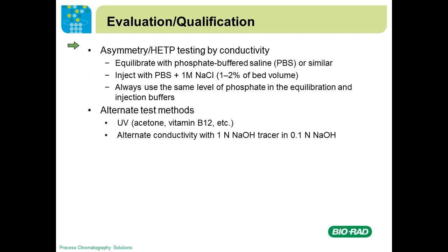Now you're ready to do asymmetry and HETP testing. You can do it two ways. Many people use conductivity: equilibrate the column with phosphate buffered saline, then inject PBS plus up to 1 molar sodium chloride, typically 1 to 2% of the bed volume. Always use the same level of phosphate in both equilibration and injection buffers — mismatching can produce odd-looking peaks. If you don't want to use conductivity, people have also used UV tracers such as acetone, vitamin B12, or caffeine.